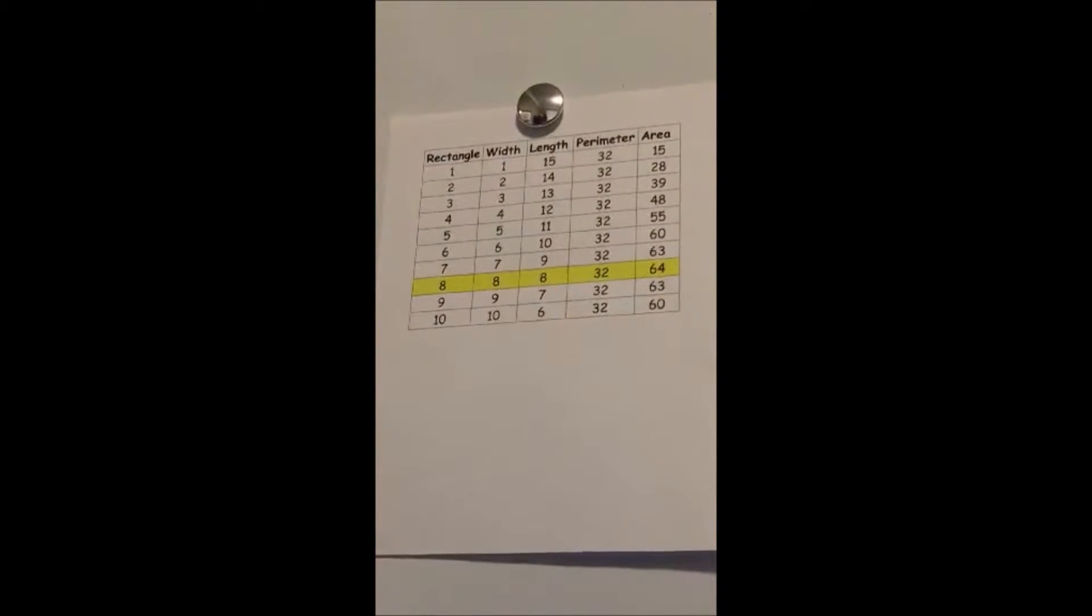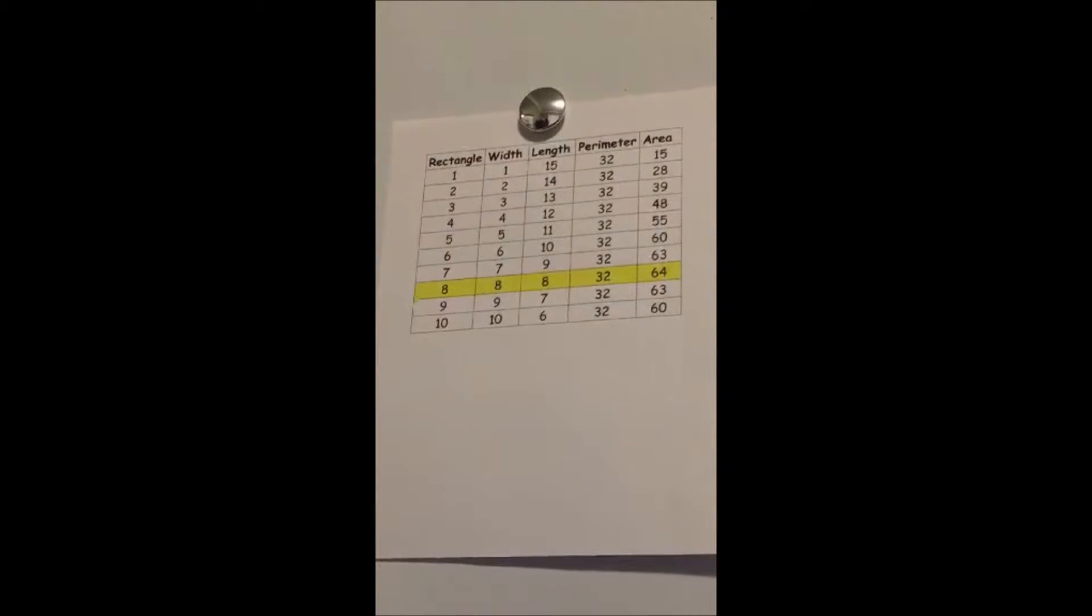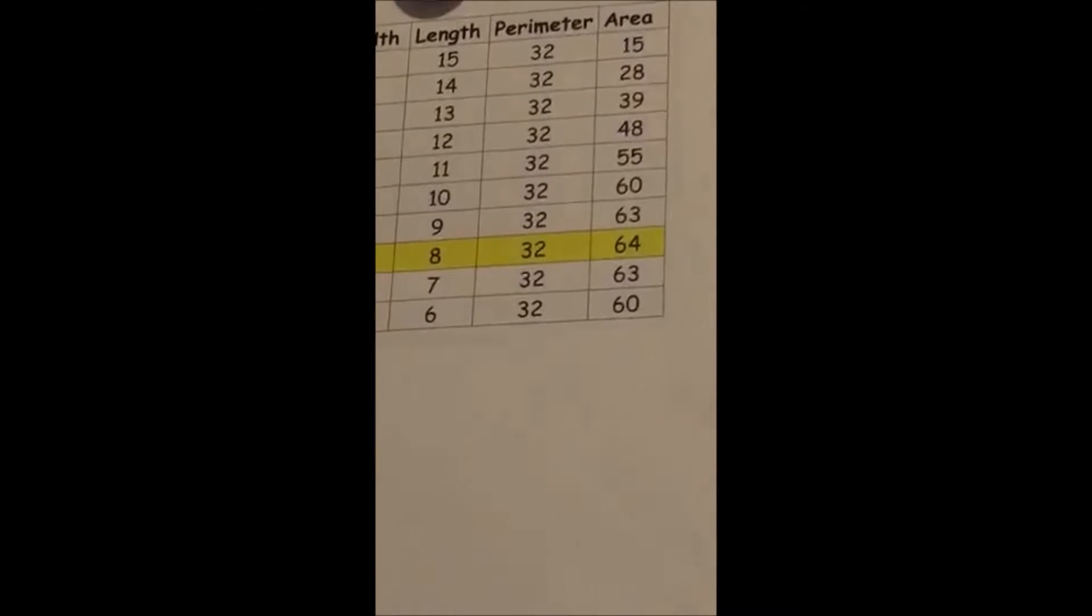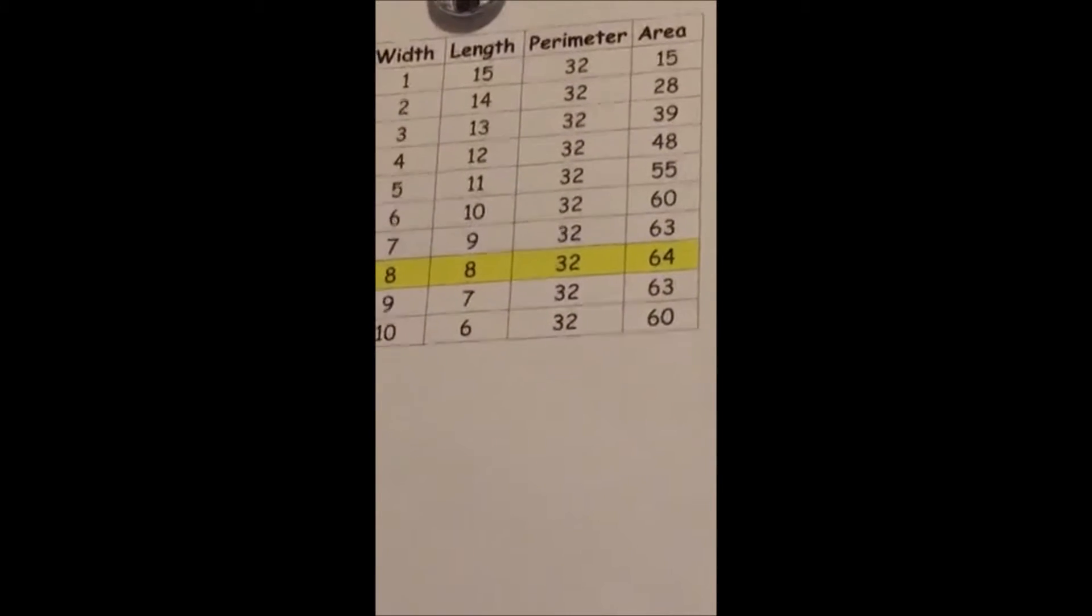The maximum area for a rectangle with a perimeter of 32 meters is 64 meters squared, the highlighted line. The shape takes on a special rectangle which is a square.